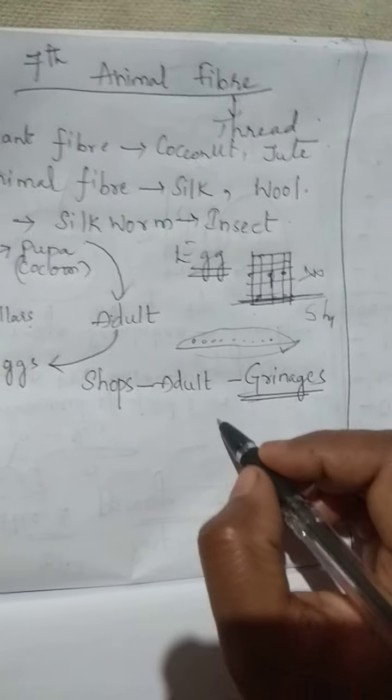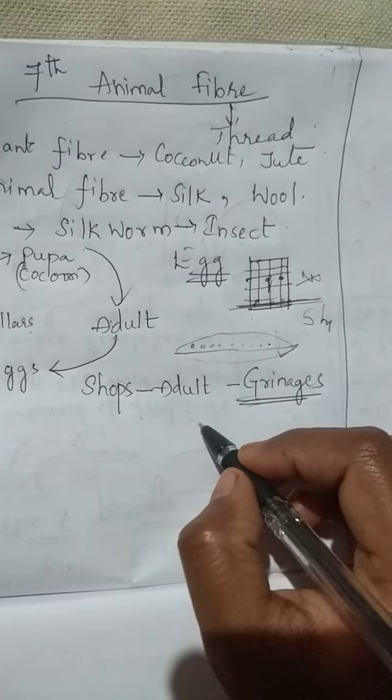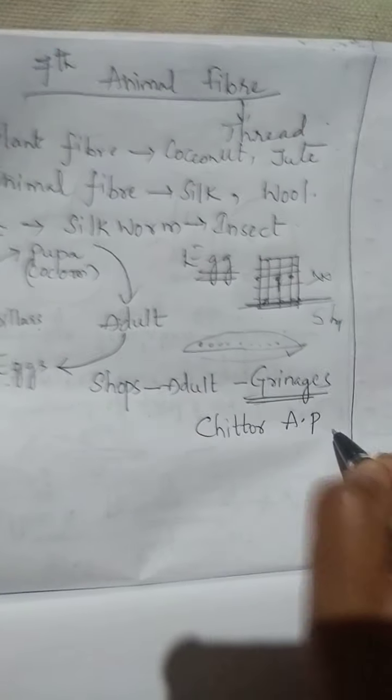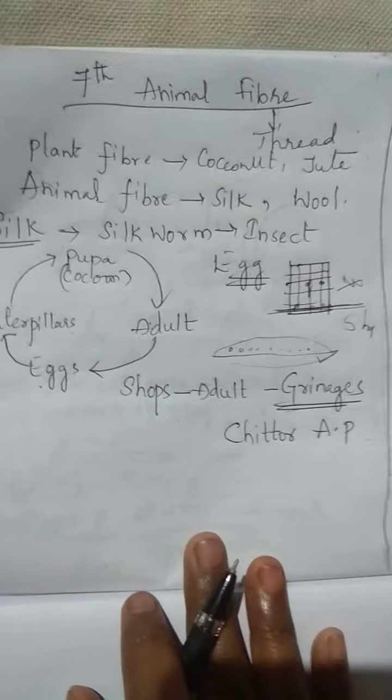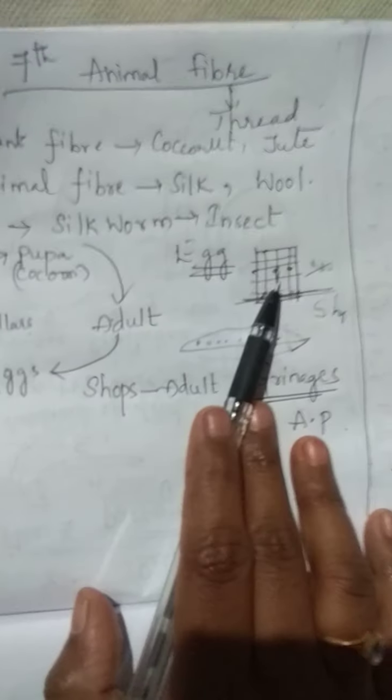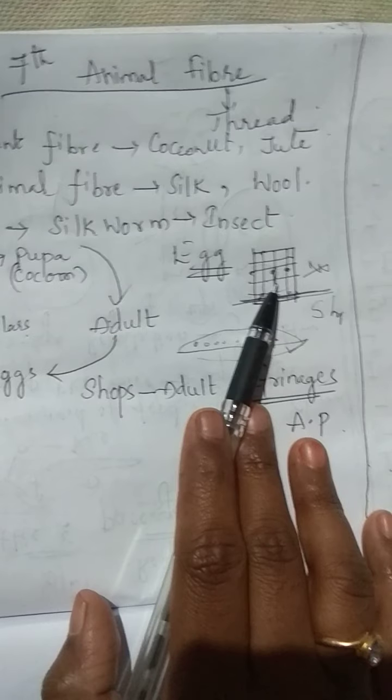A very big greenage is in Chittoor district of Andhra Pradesh. So what is the story of eggs? We get eggs from adults. First we keep adults in a cage or box.